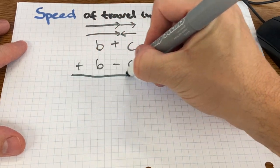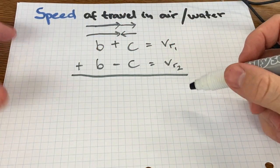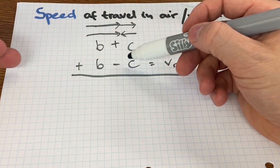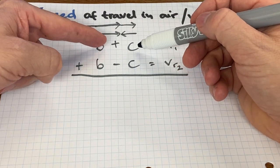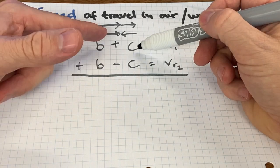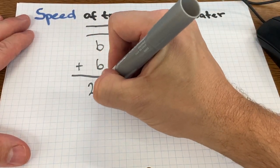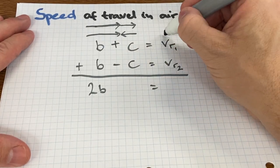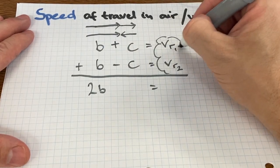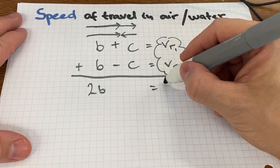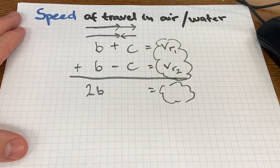So algebraically, one way to solve this thing is to eliminate one of the variables. Eliminate the variable with the opposite sign, because when you add plus C plus minus C, the C's cancel each other, right? And you're going to end up with 2B equaling whatever the combined total resultant velocity is.